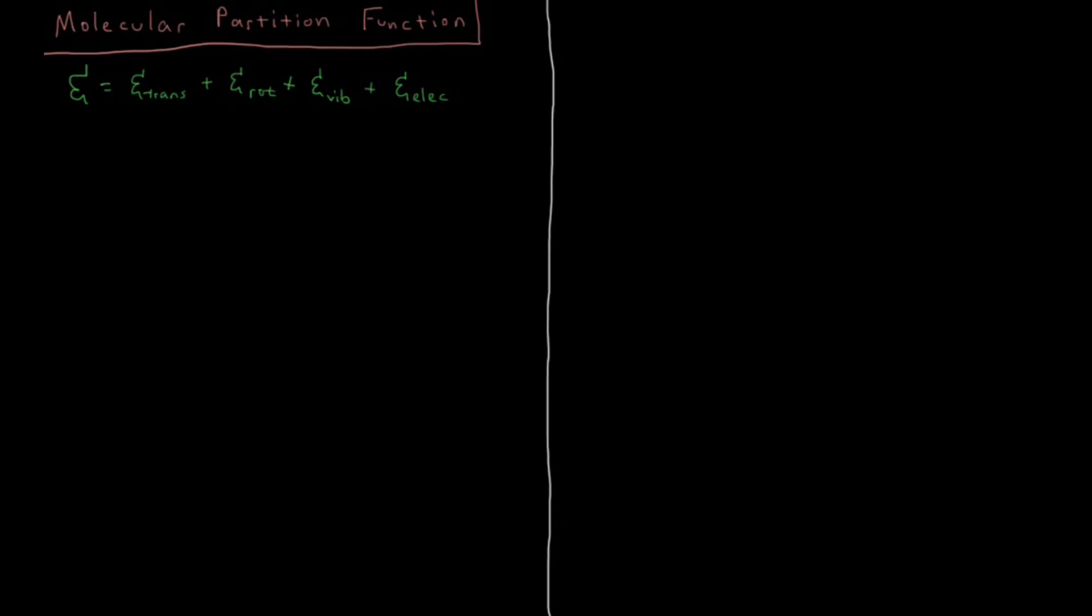Okay, so if we're talking about the probability of our system being in a given state, let's say we label these states, we have indices a, b, c, and d. It's in translational state a, rotational state b, vibrational state c, and electronic state d, that would make this energy of a, b, c, d.